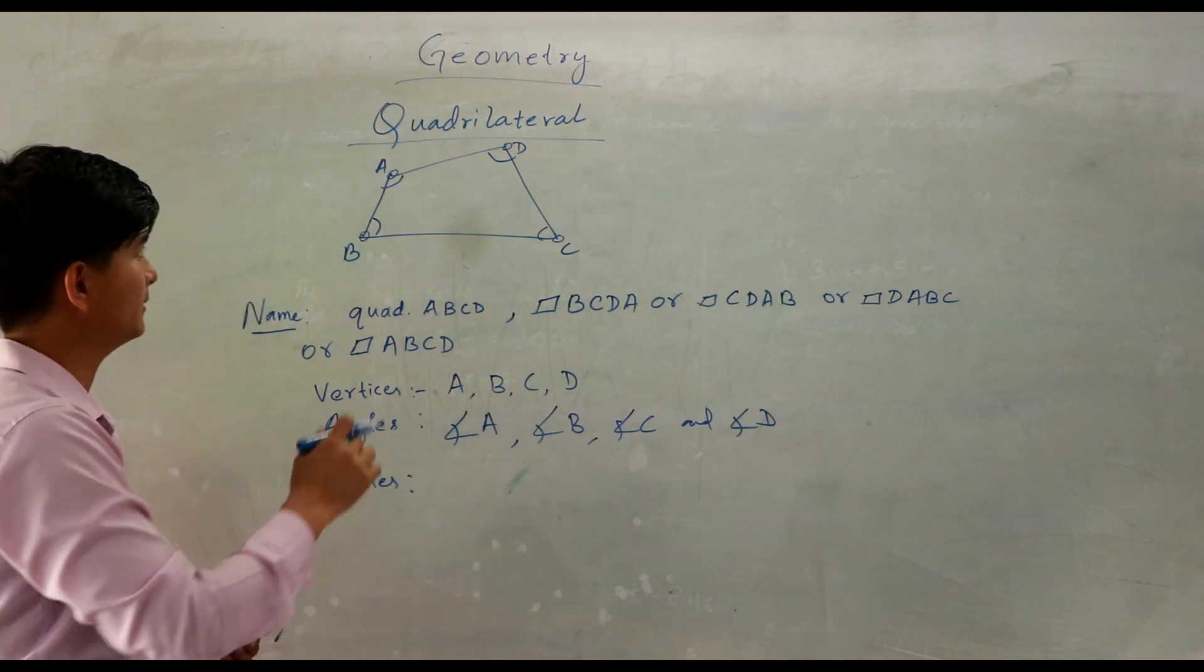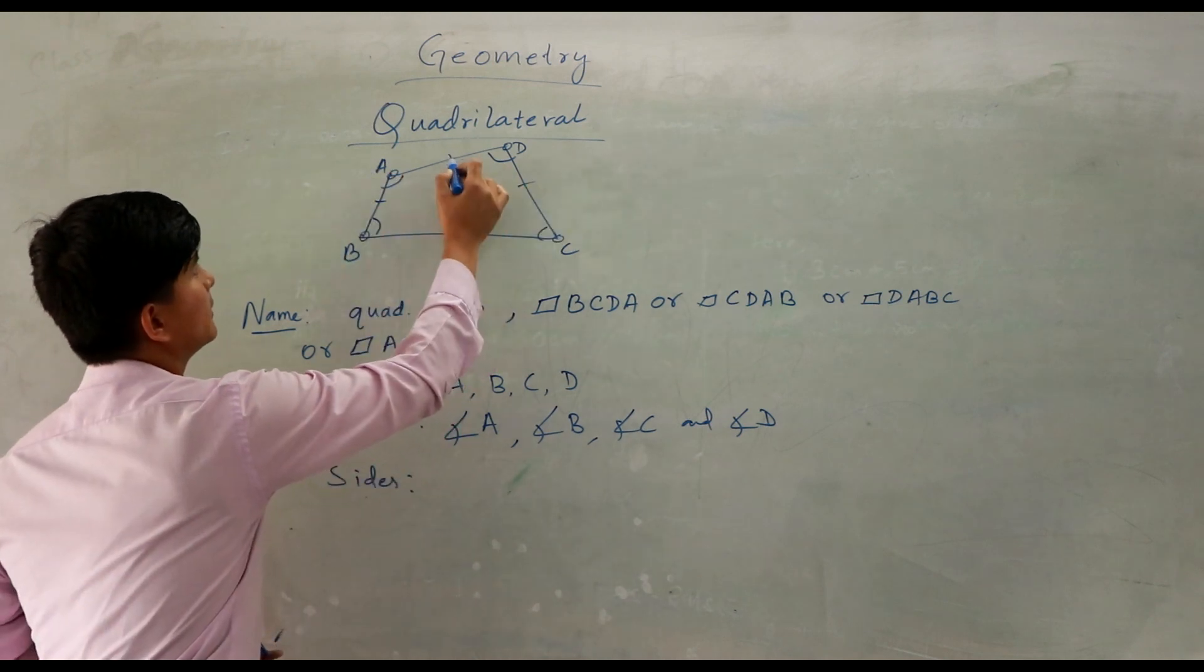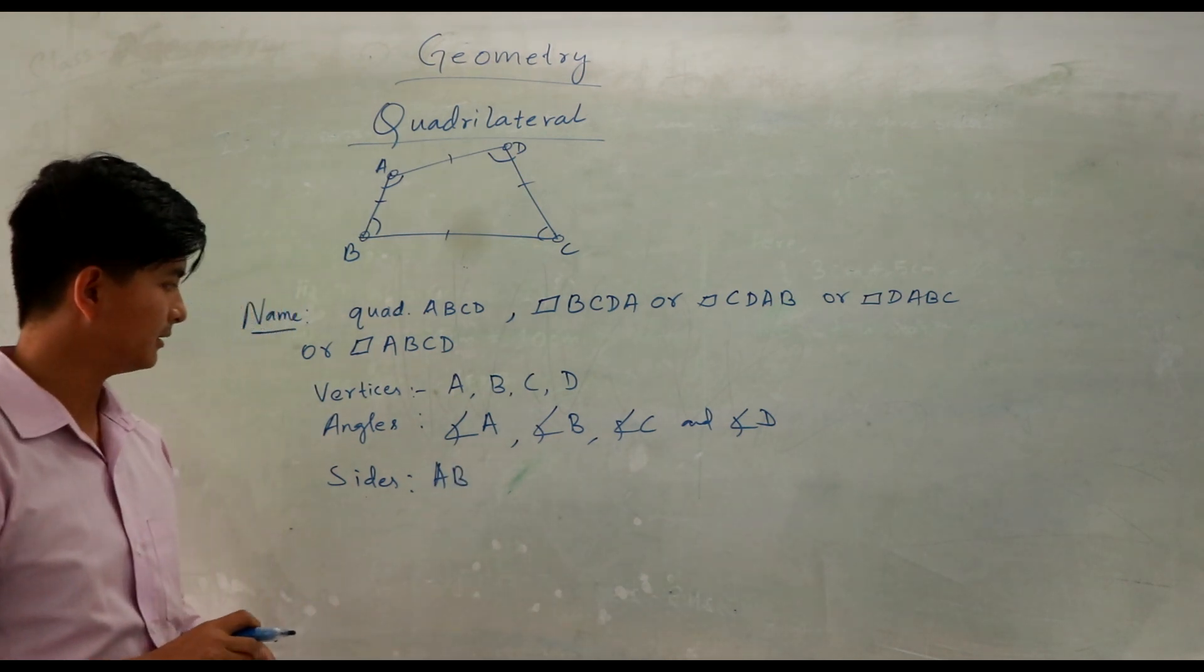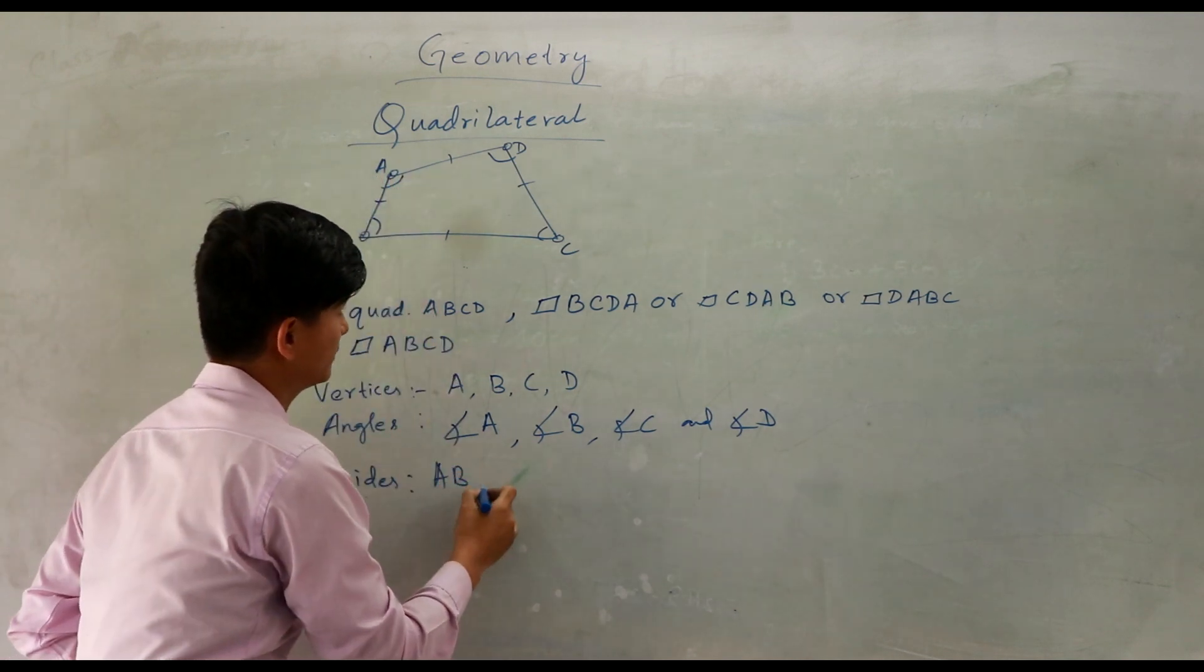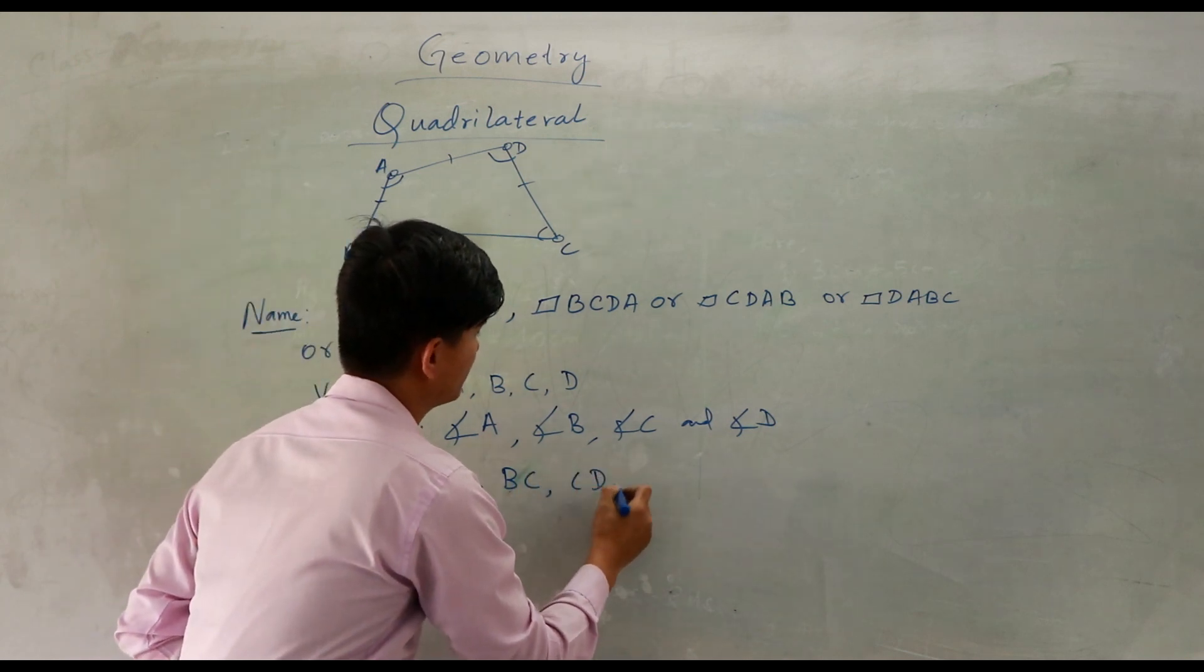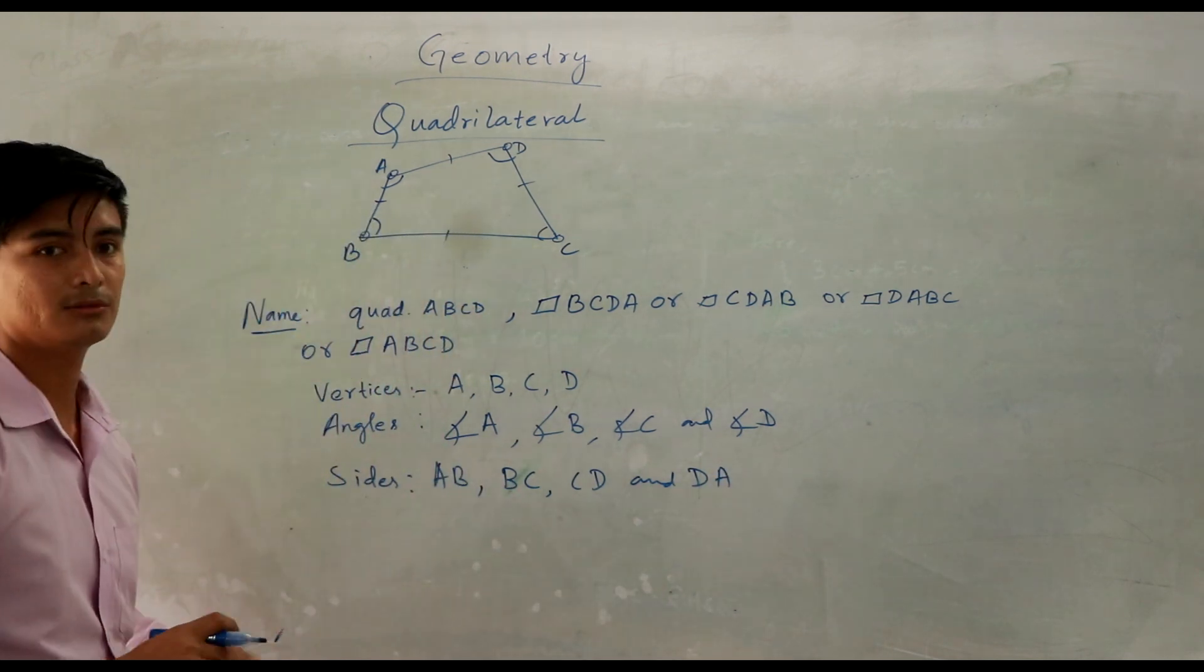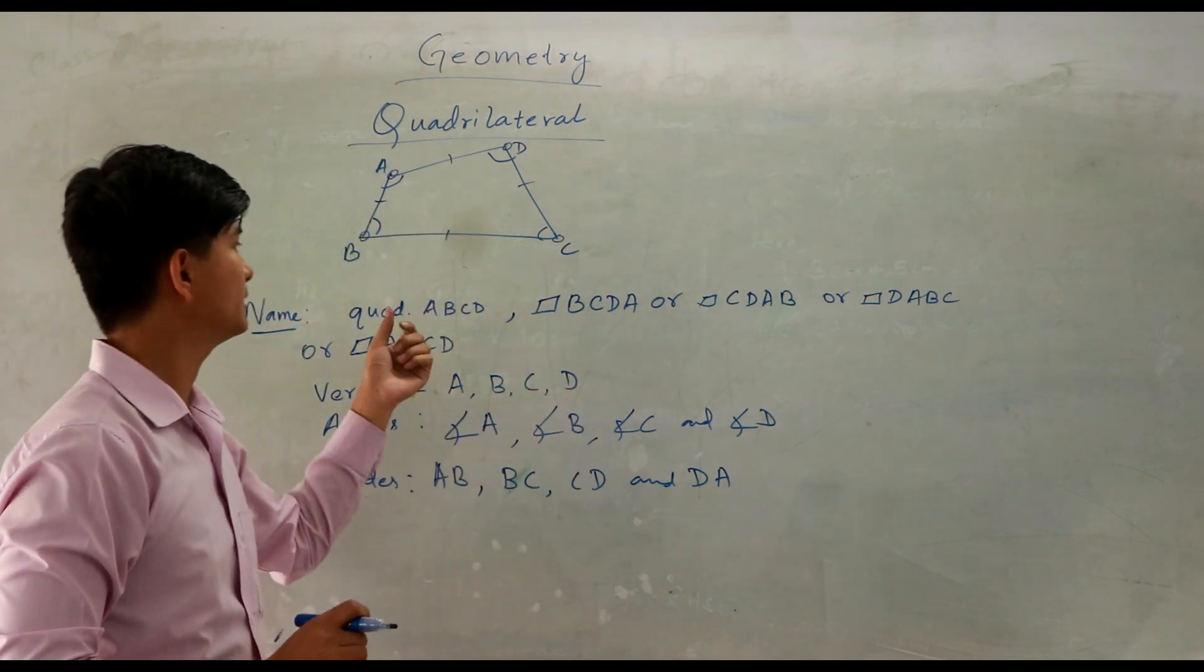Now what remains? Sides remain here. How many sides are here? You can clearly see here, these are our sides. As I wanted to tell you, this is a closed four-sided figure. So AB is first, BC is second, CD you can write, and finally DA or you can write AD. So this is a quadrilateral, a four-sided closed figure.